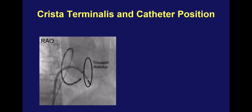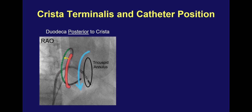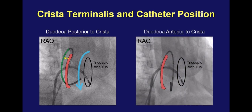One last point about catheter positioning is that in the RAO view it's very important to ensure your catheter is sitting in front of the crista terminalis. If the body of the catheter is sitting posterior to the crista, this is a problem because the wavefront travels anterior to the crista in typical flutter — you can be misled about the nature of flutter if your electrodes are positioned behind this electrical barrier rather than in front where the circuit is actually traveling. The catheter should be torqued to bring it in front of the crista terminalis, so the wavefront travels along the catheter between the tricuspid annulus and the crista terminalis.